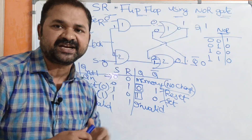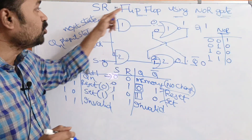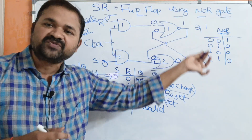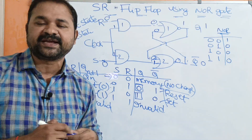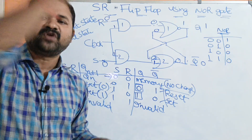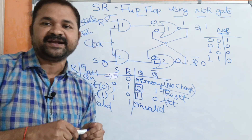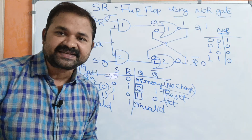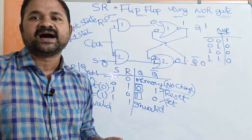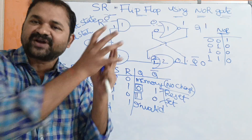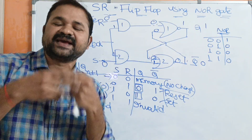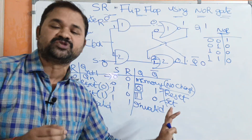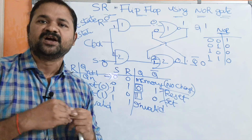This is about SR flip-flop using NOR gate. So till now we have seen two videos on SR flip-flop: first one using NAND gate and second one using NOR gate. The truth table is the same for both NAND gate and NOR gate implementation. In the next video we will discuss about the characteristic table, characteristic equation, and excitation table for the SR flip-flop. For both NAND and NOR gate implementations, the excitation table, characteristic table, and characteristic equation are all the same, because we got the same truth table for both implementations.